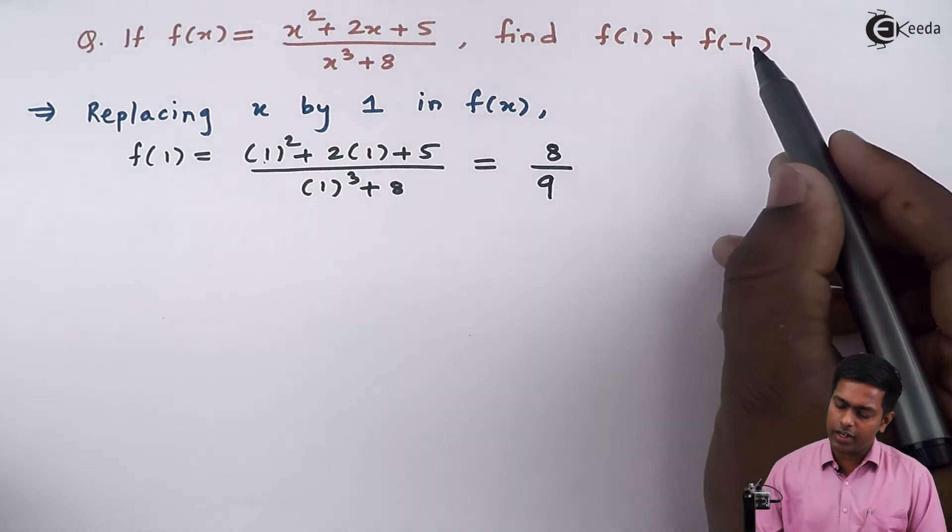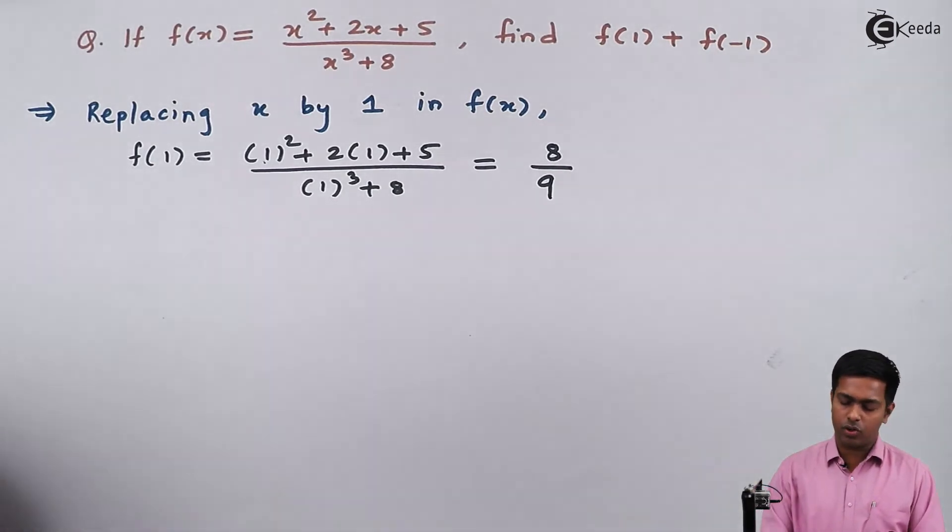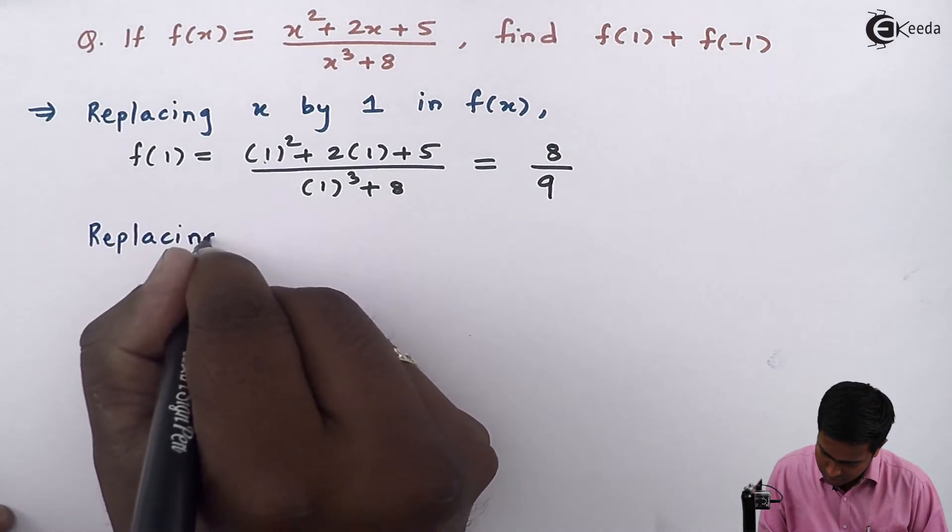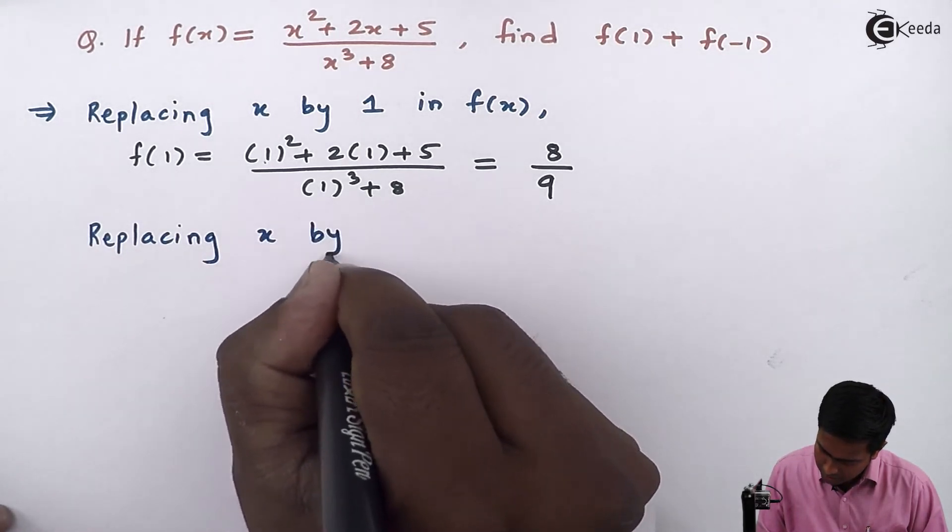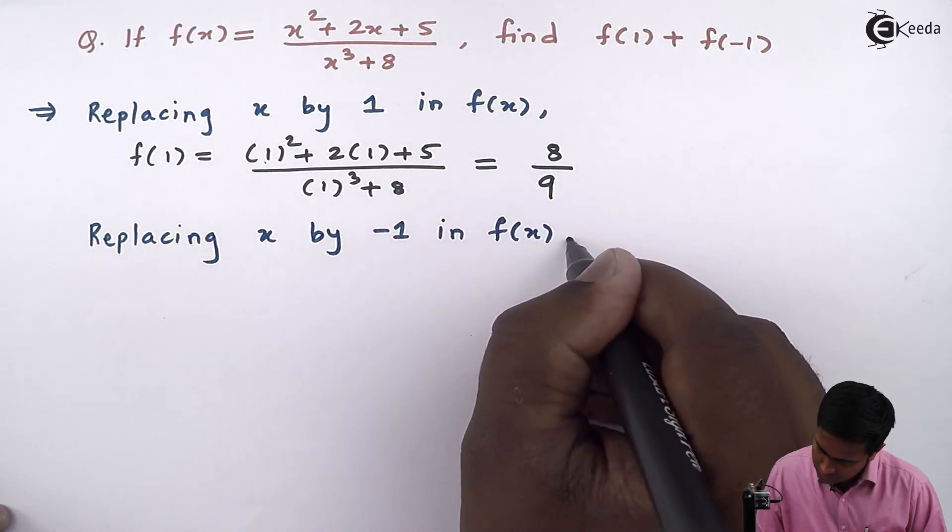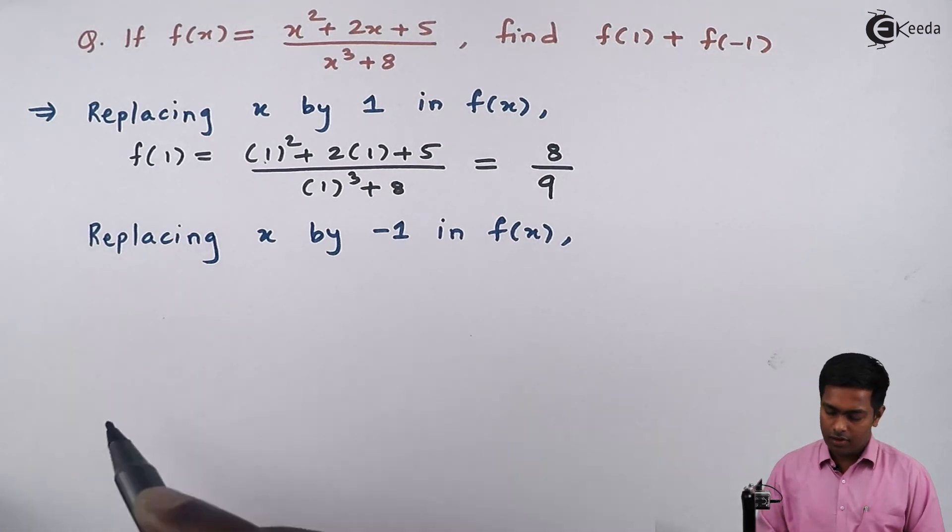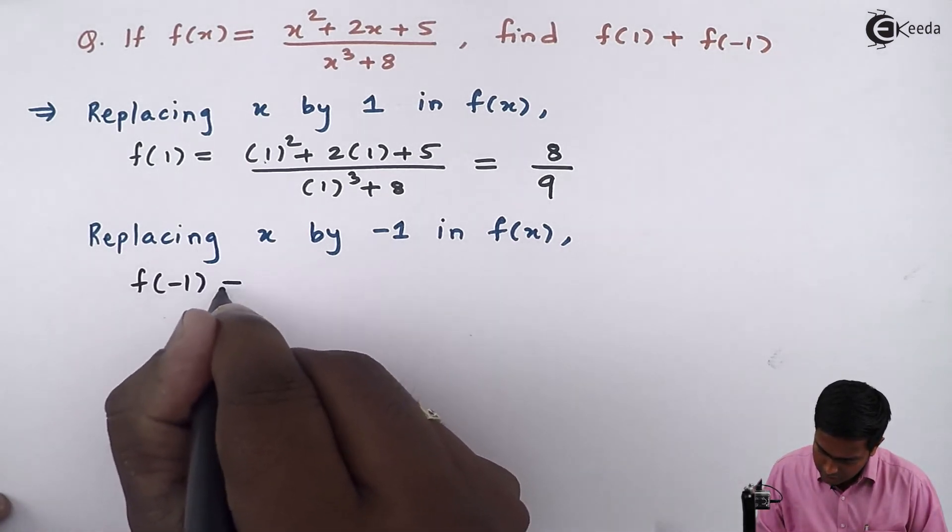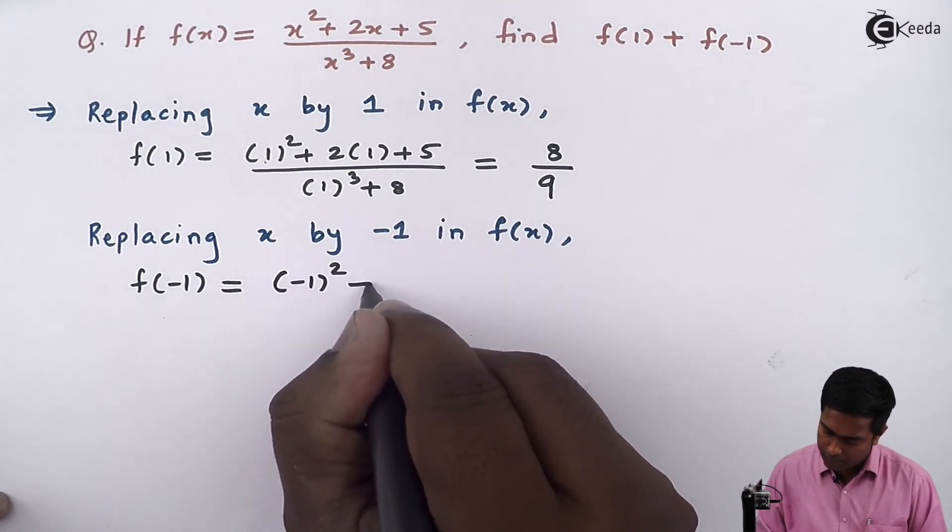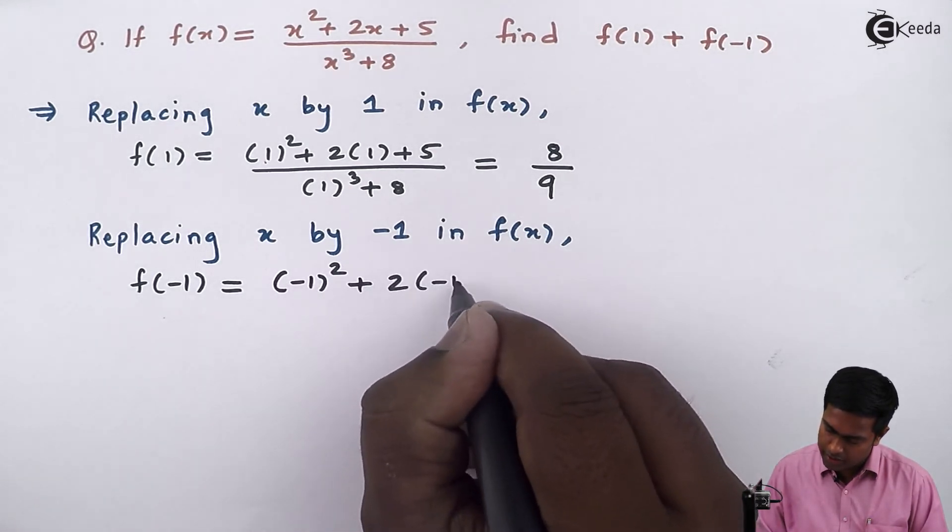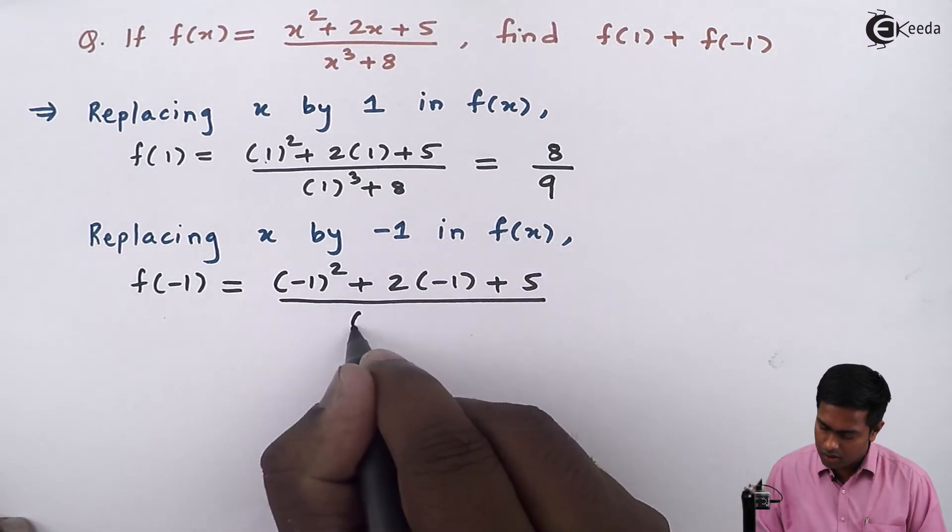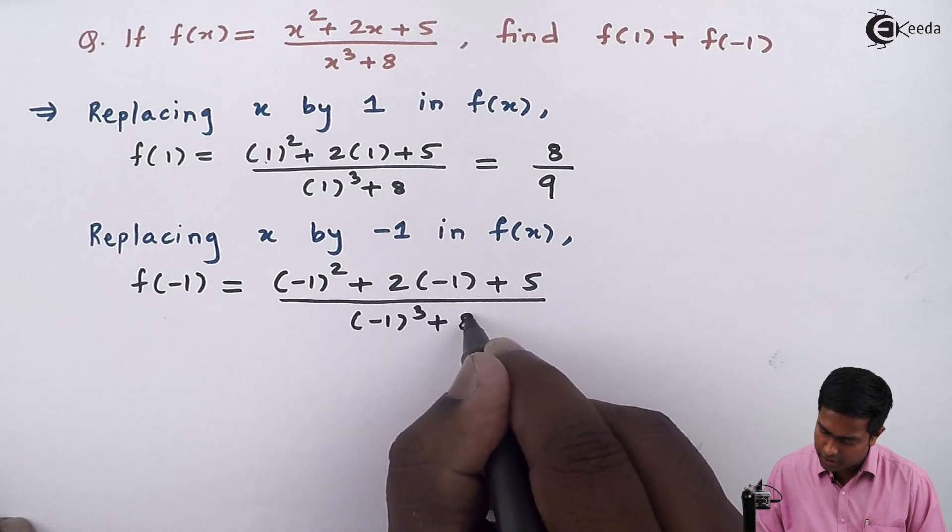Next, we will find the value of f(-1). Replacing x by -1 in f(x), we get f(-1) = ((-1)² + 2(-1) + 5)/((-1)³ + 8).